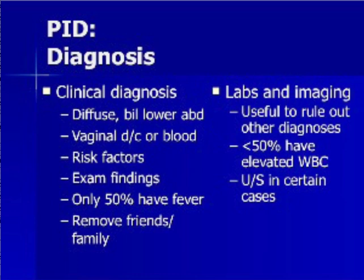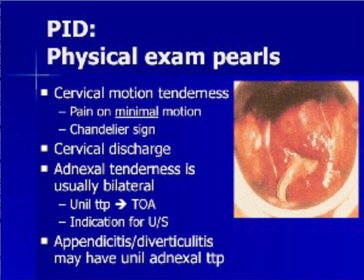Only half of all patients with PID have fever. Perhaps the most important element of the history is the sexual history, which can never be accurately obtained if the patient is not questioned alone in the exam room. Less than half of all patients with PID have leukocytosis. An ultrasound is indicated in certain cases of PID. Key physical exam findings include cervical motion tenderness, cervical discharge, and adnexal tenderness. Tenderness with even minimal motion of the cervix is considered positive. Adnexal tenderness is usually bilateral; unilateral tenderness with other signs and symptoms of PID suggests the presence of a tubo-ovarian abscess and is an indication for pelvic ultrasound. Unilateral adnexal tenderness in the absence of PID symptoms can also be a sign of appendicitis or diverticulitis in the right clinical setting.